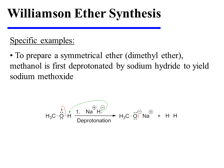In this specific example, we will prepare a symmetrical ether, namely dimethyl ether. To do so, methanol must first be deprotonated by sodium hydride, and this process yields sodium methoxide and hydrogen gas as a byproduct.